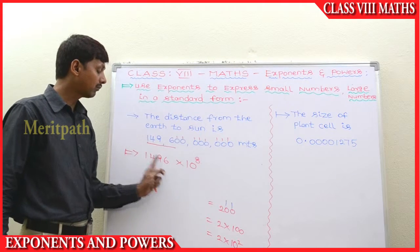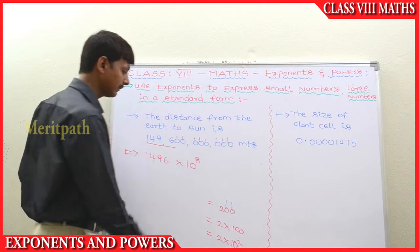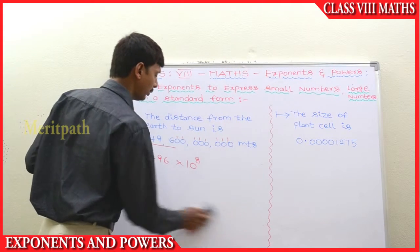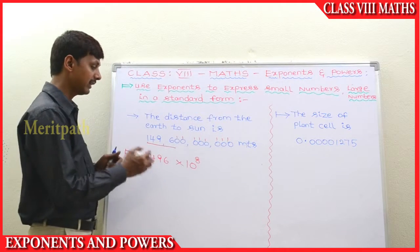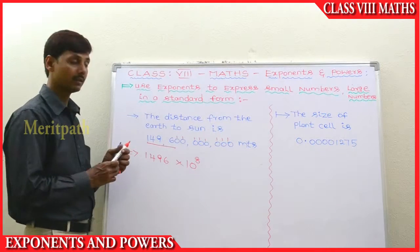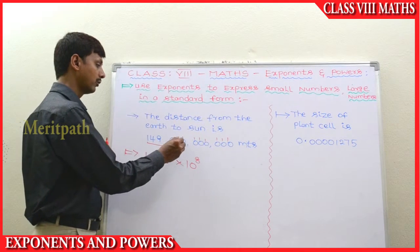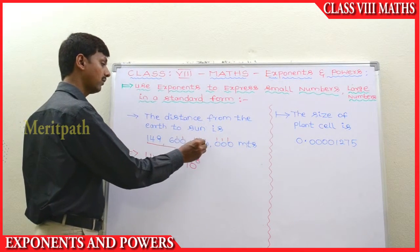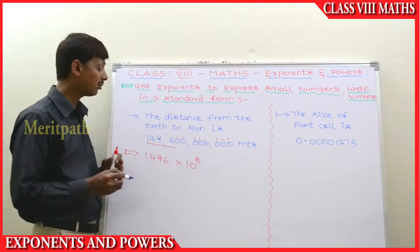So 1496 into 10 to the power 8, because there are 8 zeros present: 1, 2, 3, 4, 5, 6, 7, 8. So 10 to the power 8.